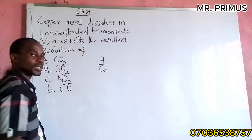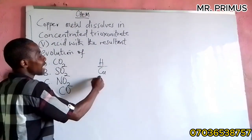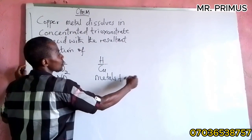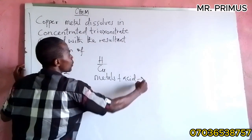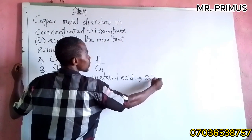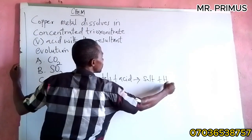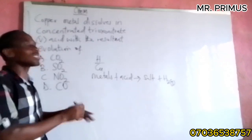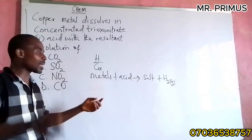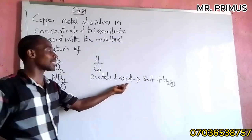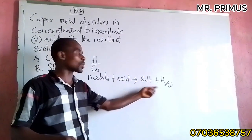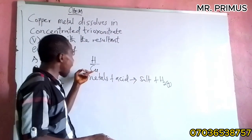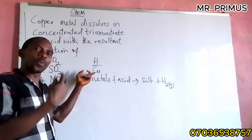Why am I talking about this? Generally, metals when they react with acid we produce the corresponding salt and hydrogen gas. This is the general property of metals. When they react with dilute acids, we produce salt and liberate hydrogen. But copper is less electropositive.